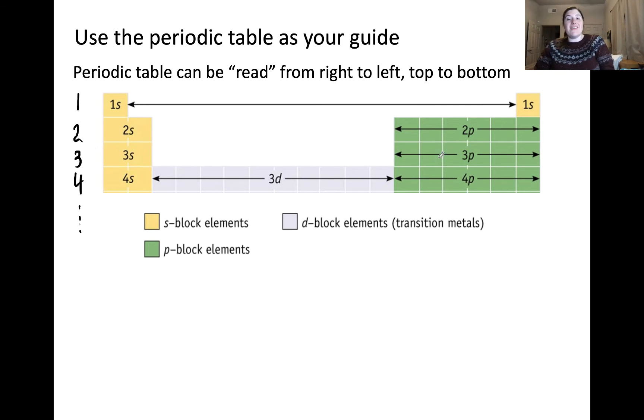And you might be wondering, well, why is the 3d written down here? It actually has to do with the energy of electrons in the 3d orbital. It just so happens that the 4s is lower in energy than the 3d. Sometimes, this section of the periodic table, the d-block, is referred to as the n-1d.